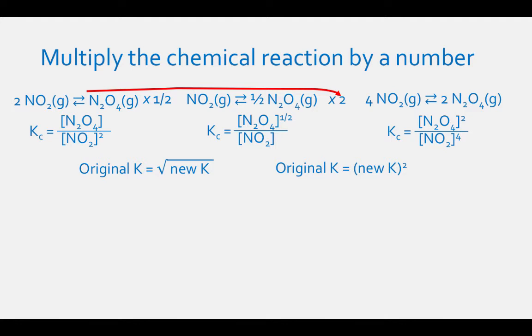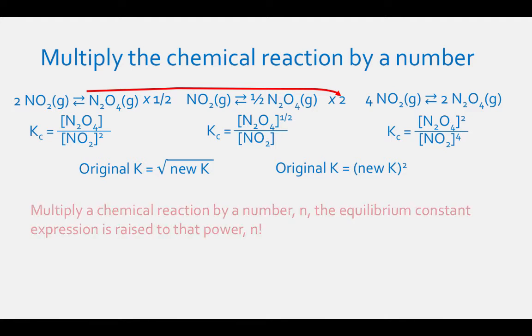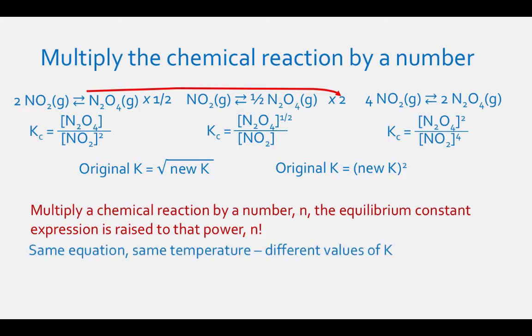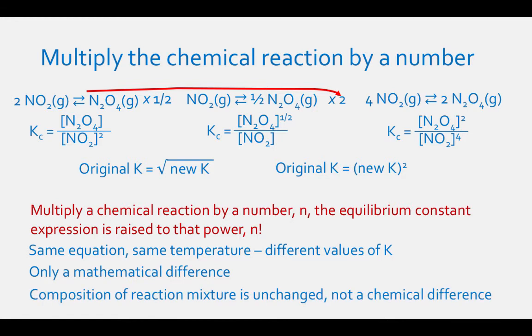We can say that if we multiply a reaction equation by a number n, then the equilibrium constant expression is raised to that power n. It might seem strange that the same equation at the same temperature can have different values of equilibrium constant, but this is only a mathematical difference. It will not affect the composition of the reaction mixture at equilibrium — it is not a chemical difference.